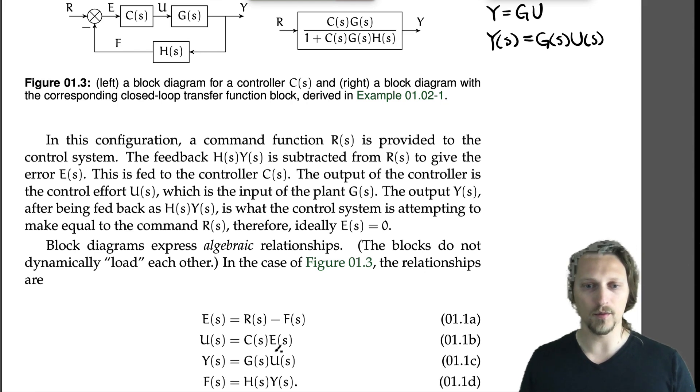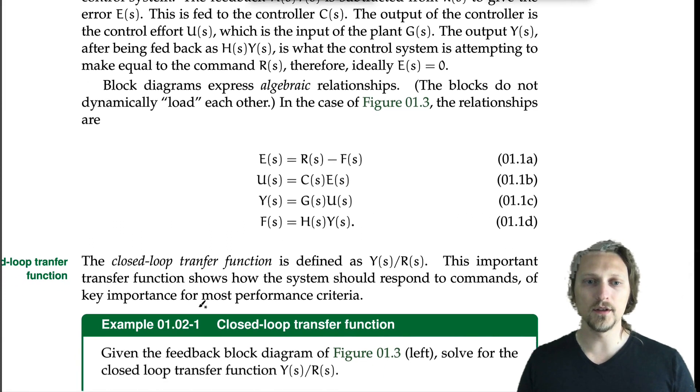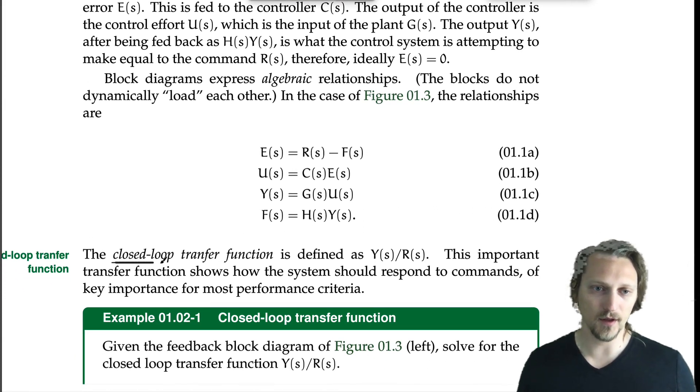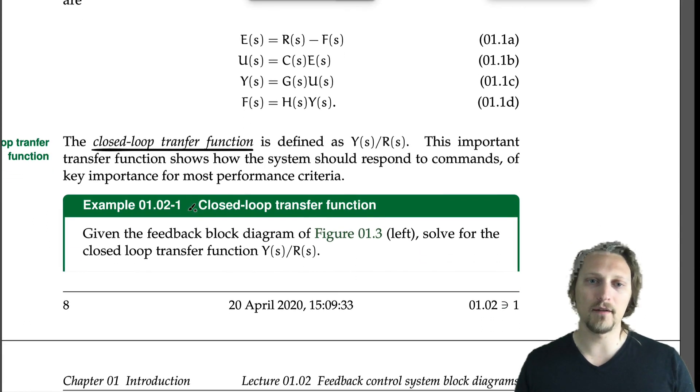The closed-loop transfer function, which is an important term, is defined as the output over the command, Y over R. This transfer function shows how the system should respond to commands, of key importance for most performance criteria. This is very frequently how we'll think about how our choice of controller affects the closed-loop transfer function.